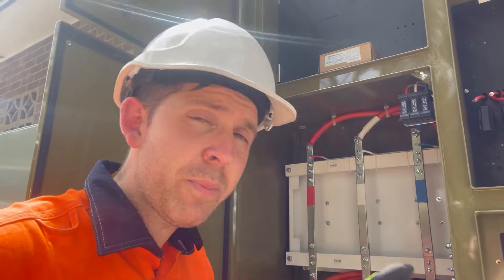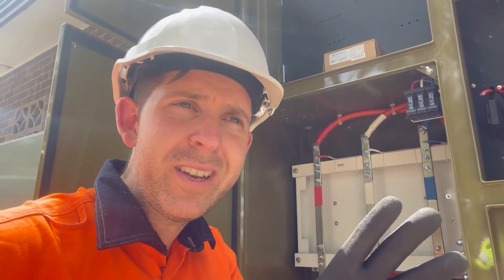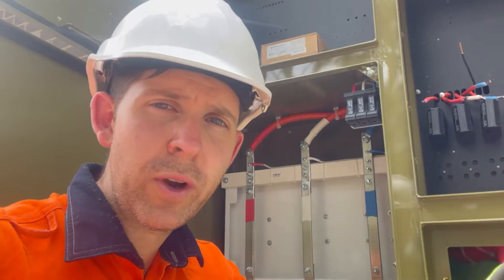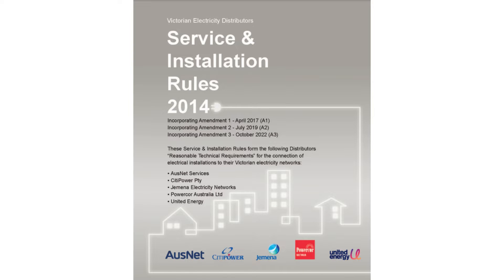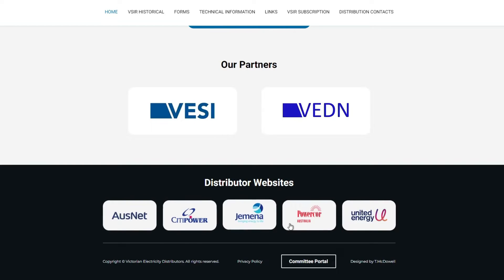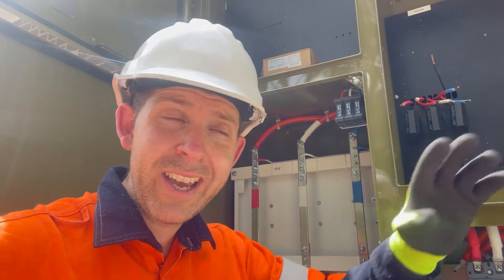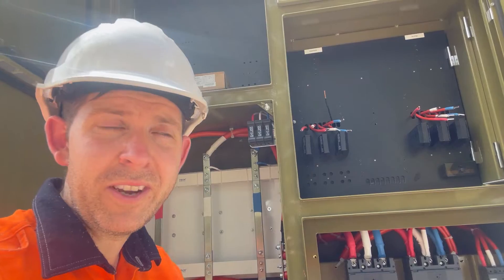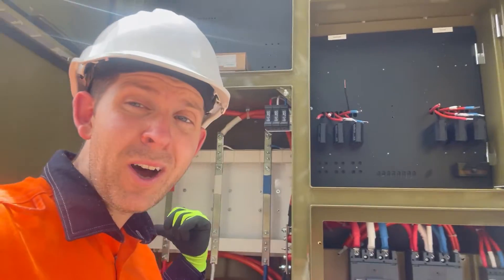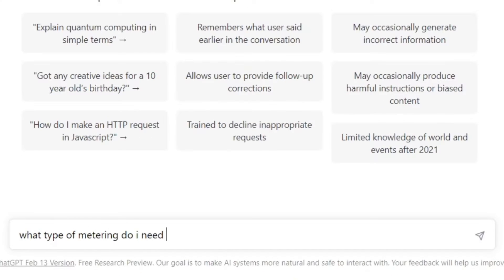This here is what we call a group metering panel. You're probably more familiar with it in groups of units or high-rise buildings. A little bit of context: here in Victoria, Australia, we have something called the Victorian Service and Installation Rules. It's basically the electricity distributors getting together and setting out guidelines around how you deal with a distribution network, and part of that is metering. That's a long way of saying that some are small and direct metered, but this behind me is big — it needs CTs. I have two questions to ask ChatGPT: one about what type of metering I need, and then how to install it.